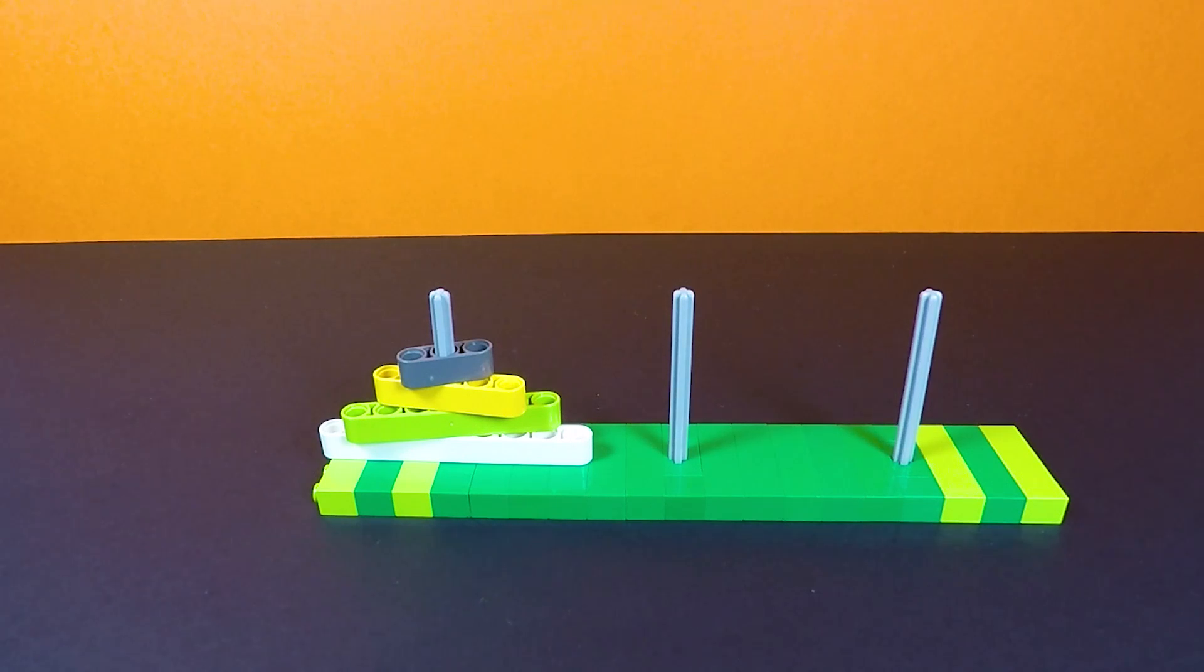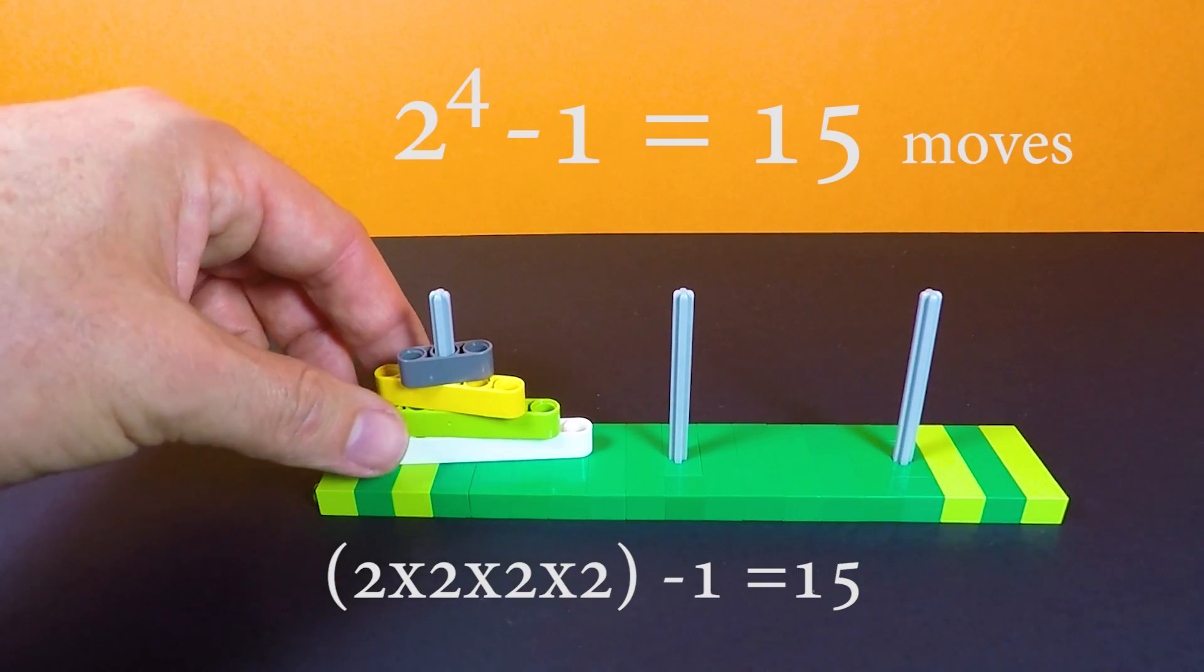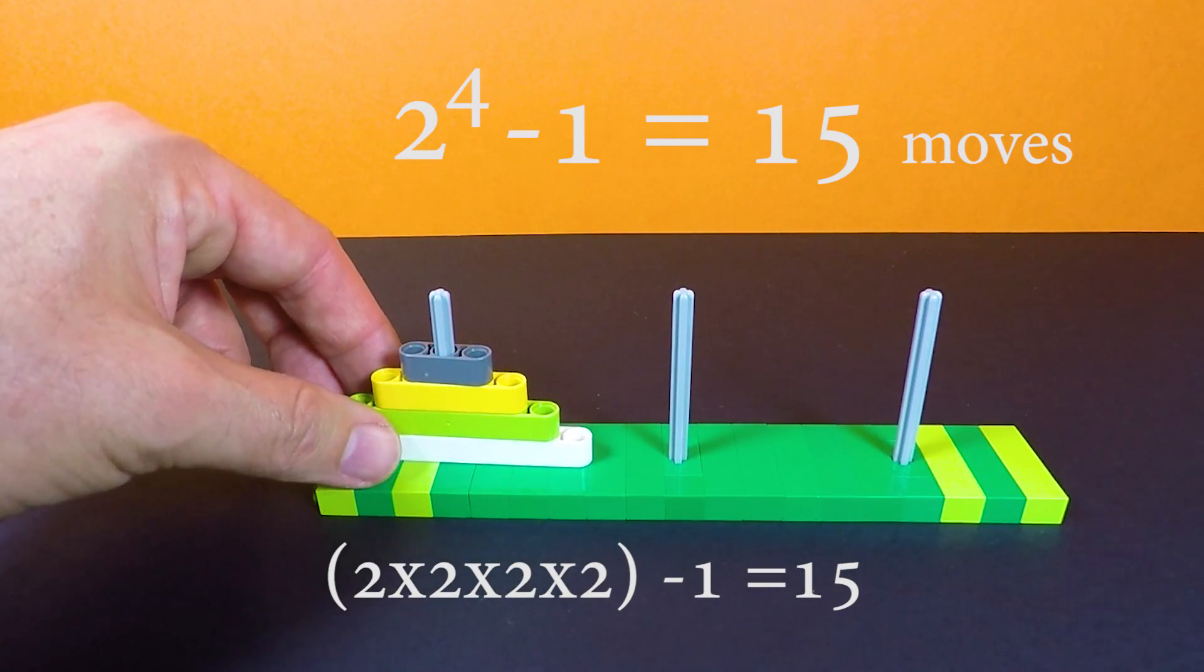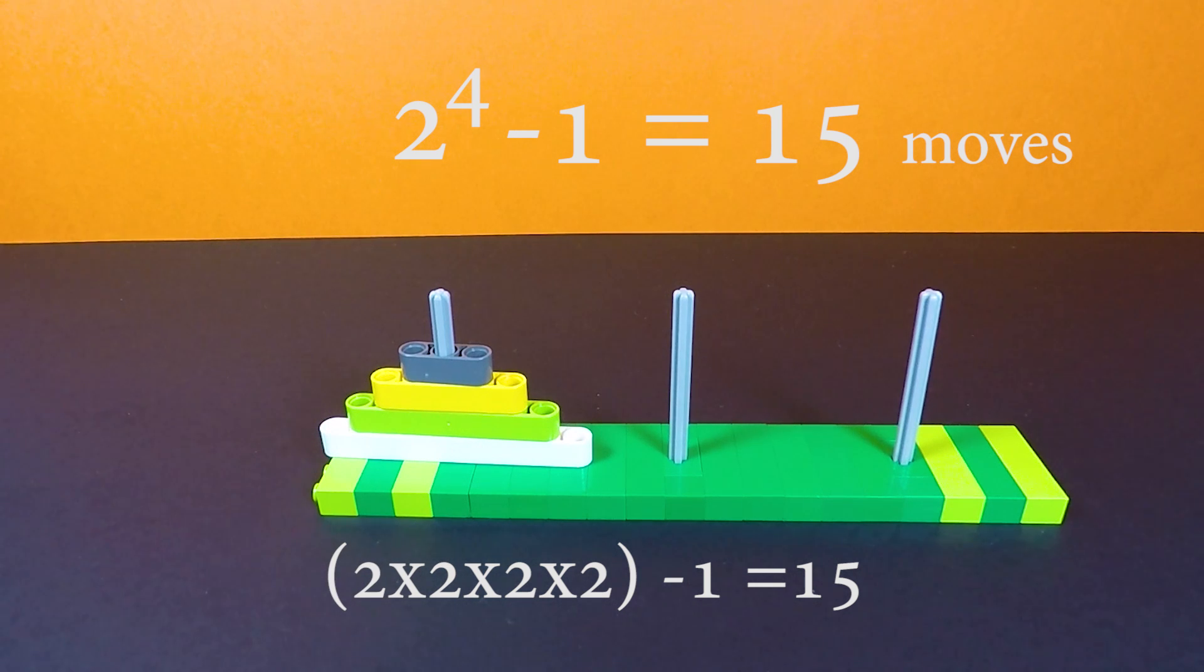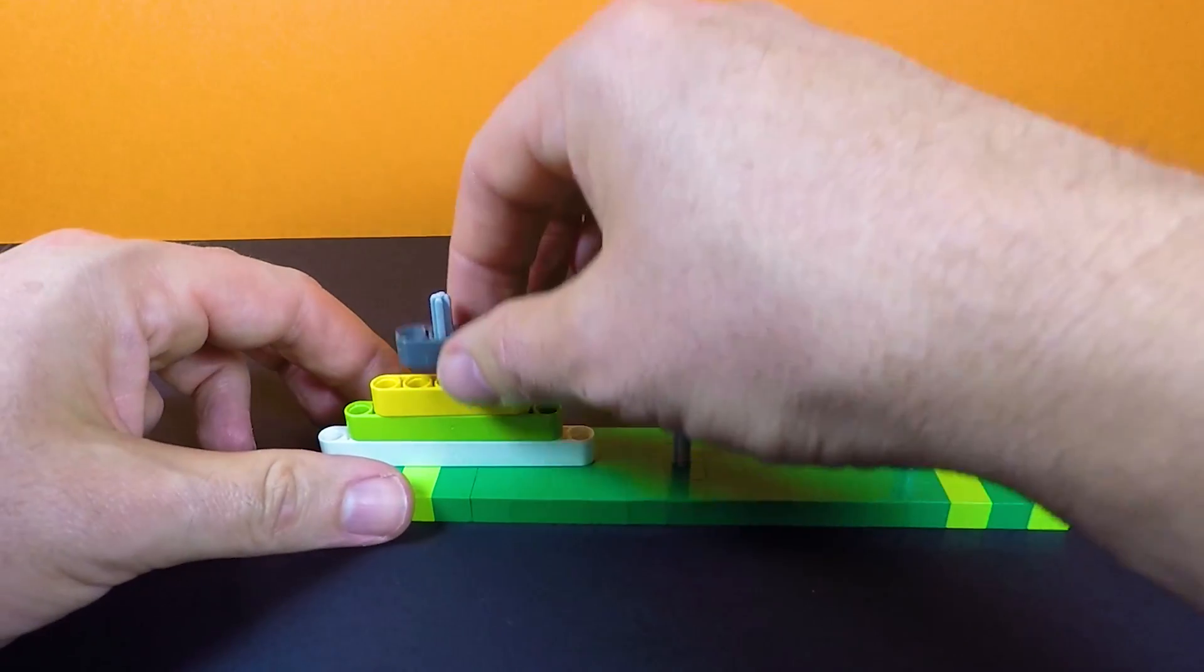So in this case we have 4, so it's 2 to the power of 4, which is 16 minus 1. So let's do this.